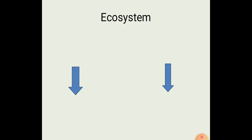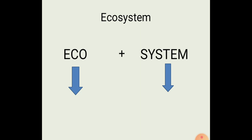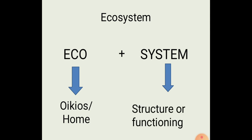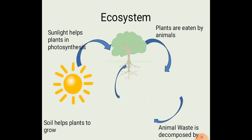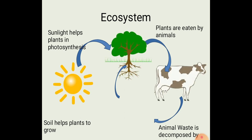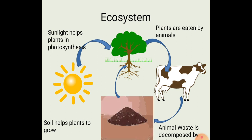Let us try to understand the meaning of ecosystem. This term is made up of two words: eco and system. The word 'eco' came from the word 'oikios' which means home, and 'system' means structure or functioning of something. Ecosystem means the relationship between organisms living and interacting with each other as well as with non-living components such as sunlight, plants, animals and soil. This term was coined by A.S. Tansley in 1935.